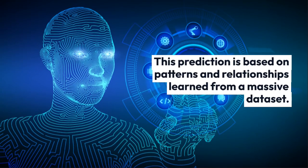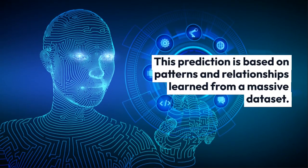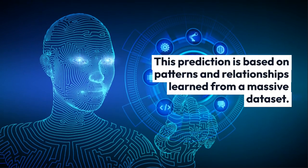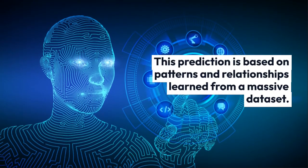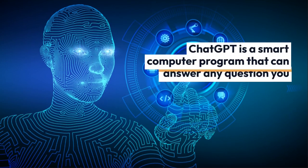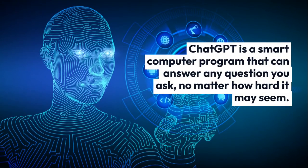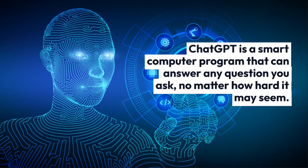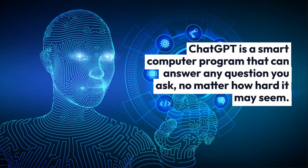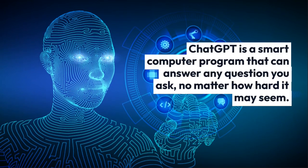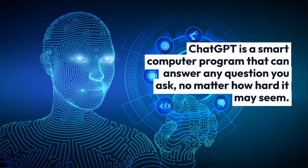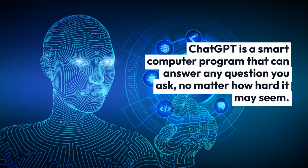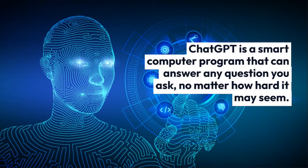ChatGPT works by predicting what text should come next in any given sentence, based on the patterns and relationships it learned from the massive dataset it was trained on. With a vast array of knowledge at its fingertips, there is no question too difficult or obscure for ChatGPT to tackle. ChatGPT is changing the way we interact with artificial intelligence, and it's just the beginning — who knows what other innovations lie ahead as we continue to unlock the secrets of the human mind and its ability to create intelligent machines.